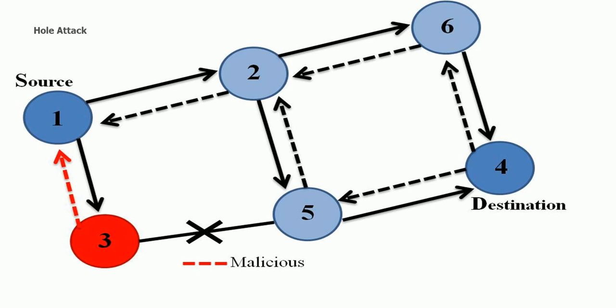Another common attack is the hole attack, where a node that pretends is called a hole. There are various types of hole attacks such as black hole attack, grey hole attack, worm hole attack, and so on. A black hole attack is defined as the attack in which a malicious node attracts or requests packets from every other node and drops all the packets, meaning no transmission passes through that node.